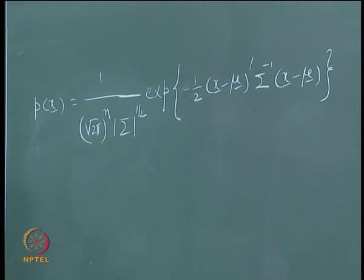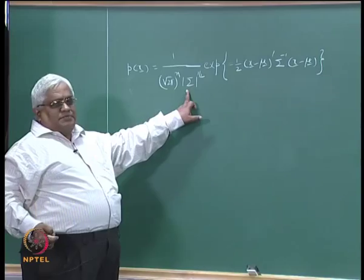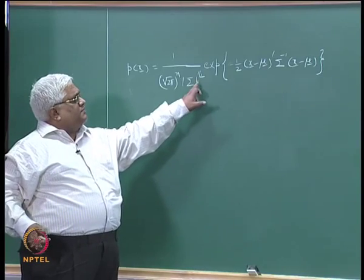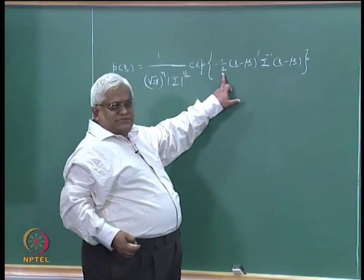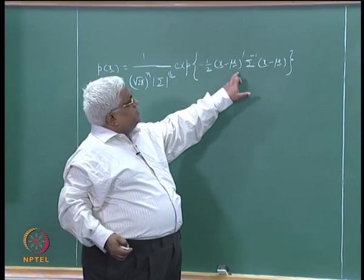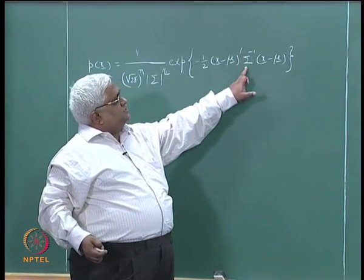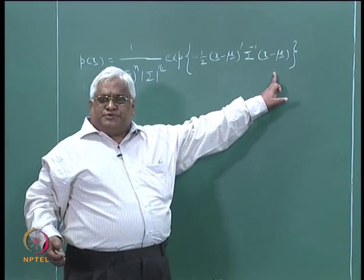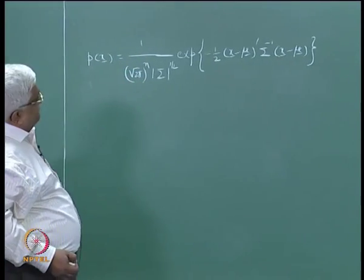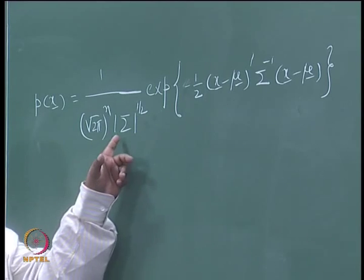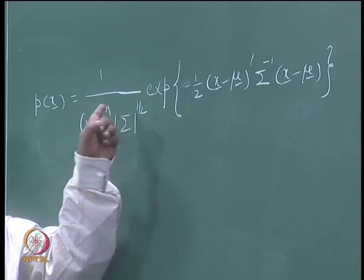The definition of the Gaussian density function is: 1 over square root of (2π)^n times the determinant of sigma to the power half, times the exponential to the power of minus half (x minus mu) prime, where prime means transpose, times sigma inverse times (x minus mu).